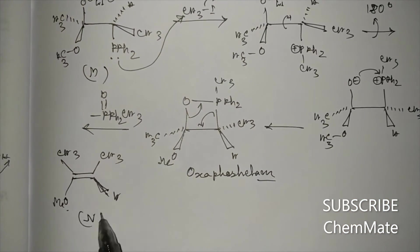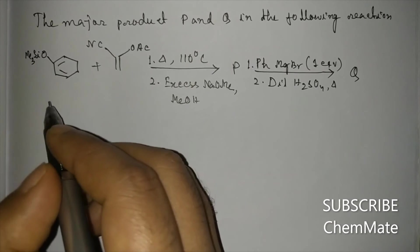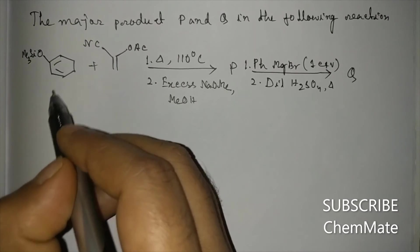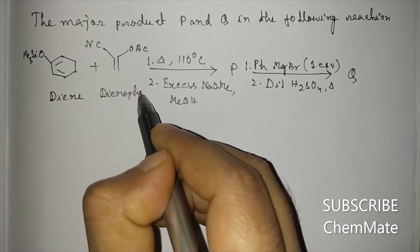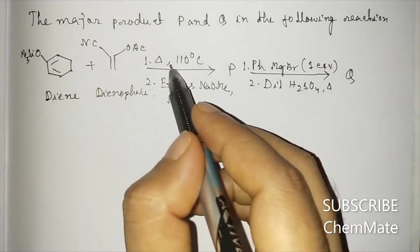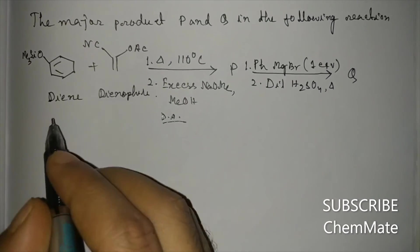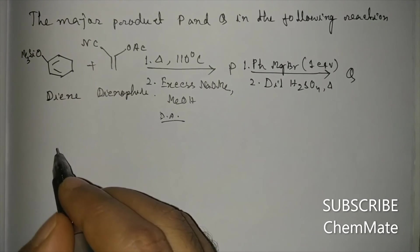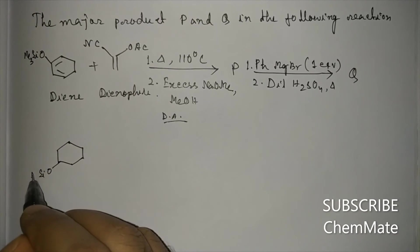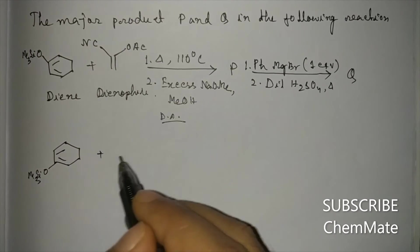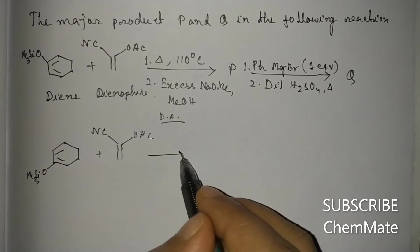Next question: identify the major products P and Q. Here there is a diyne — a Diels-Alder diene — and when heated at 180 degrees, a [4+2] cycloaddition (Diels-Alder reaction) takes place with the dienophile bearing CN and OAc groups.